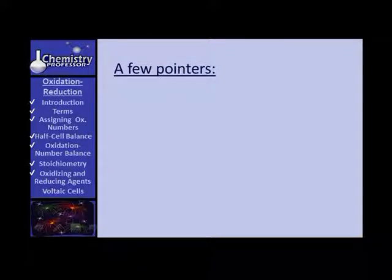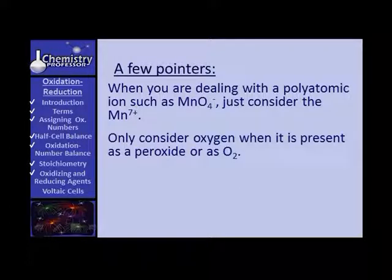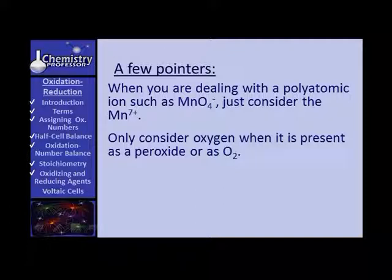A few pointers that come with polyatomic ions. If you're looking at a polyatomic ion such as permanganate, don't consider oxygen — just consider the manganese, which has a plus seven charge. The only time you consider oxygen is when it is present as a peroxide or as O₂. It's very rare that you're going to find oxygen changing from a negative two to one of the lesser states.